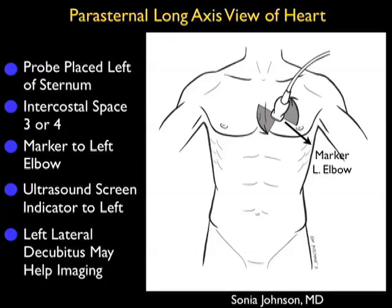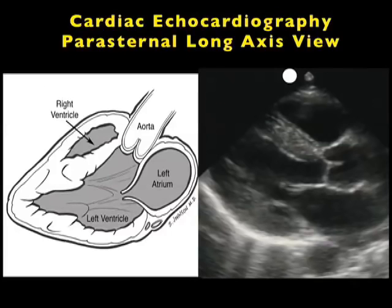Occasionally it can be somewhat difficult to get a good view of the heart from this plane, and moving the patient into the left lateral decubitus position can sometimes help imaging from the parasternal long axis plane of the heart. So now let's take a look at the images that we'll obtain by performing the parasternal long axis view of the heart.